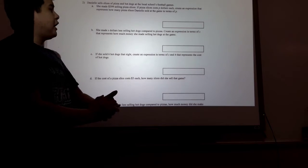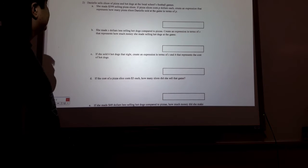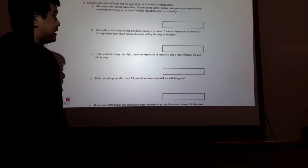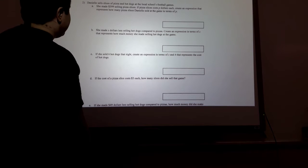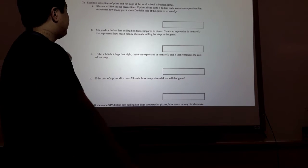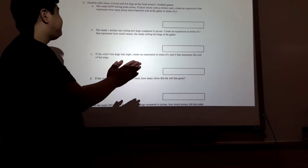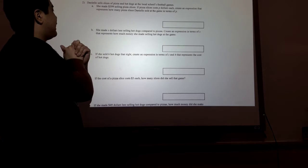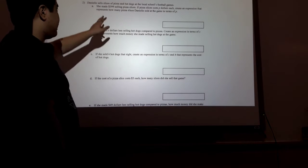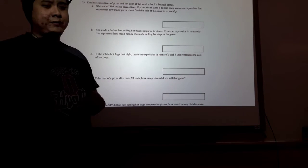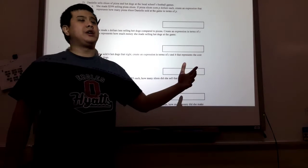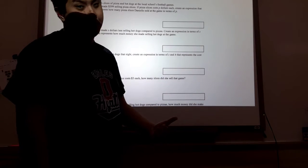Danielle sells slices of pizza and hot dogs at local school football games. She made $399 selling pizza slices. If pizza slices cost P dollars each, create an expression that represents how many slices Danielle sold at the game in terms of P. If she made $399 selling slices of pizza and each pizza slice costs a dollar, then she sold 399 slices of pizza, because we would do 399 divided by 1 which is 399.